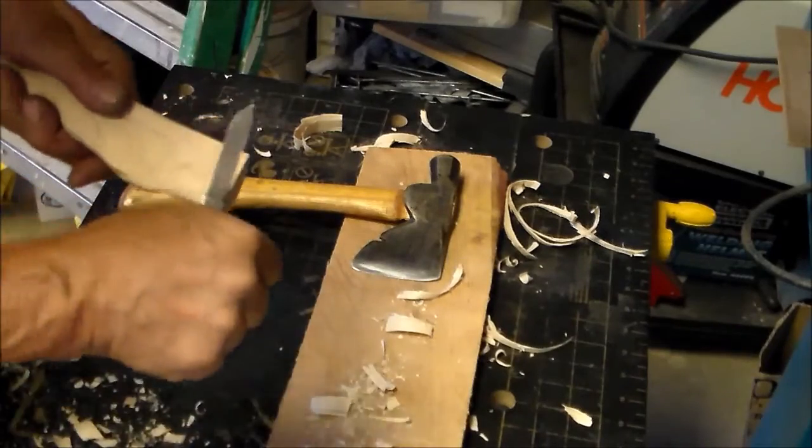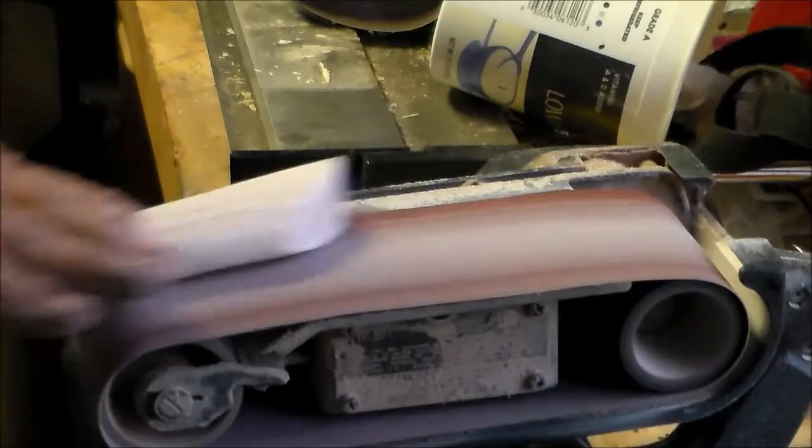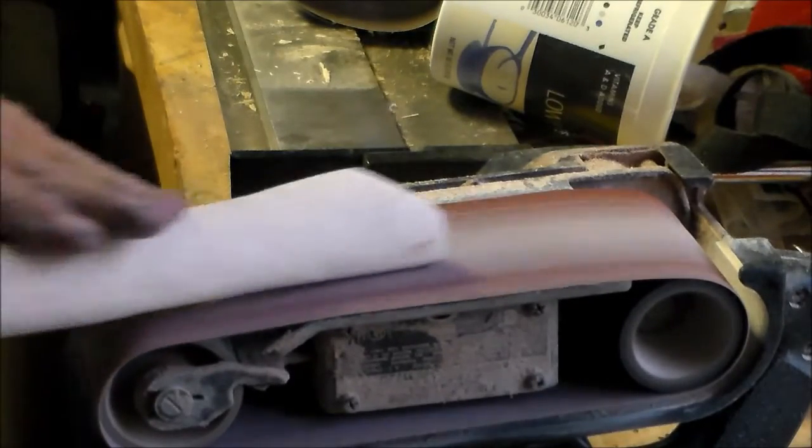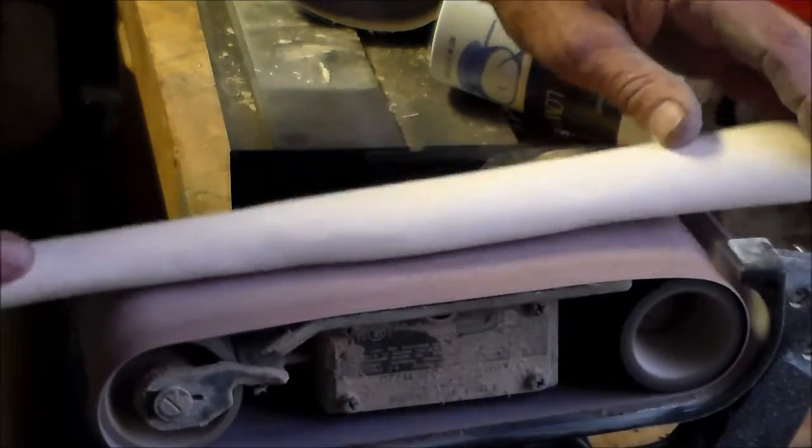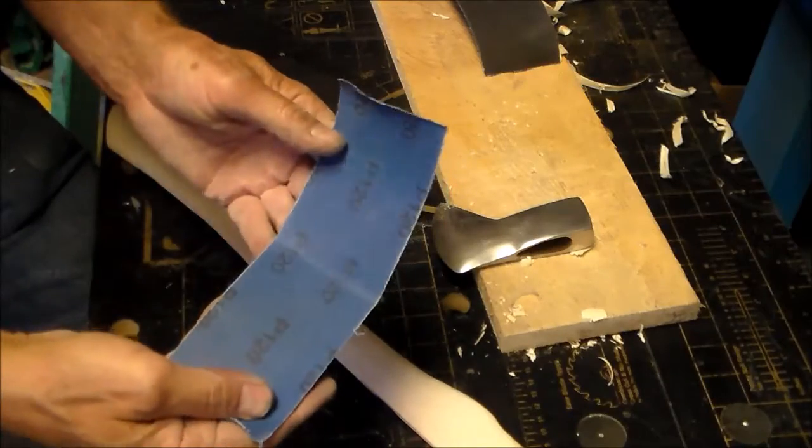It also gives you finer control of the whittling action. I'm using a coarse grit sandpaper on my belt sander to smooth out all the rough chopping nicks in the whittling process. It's 120 grit.